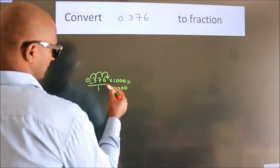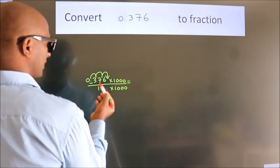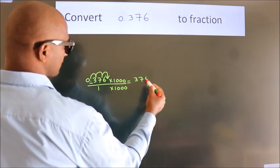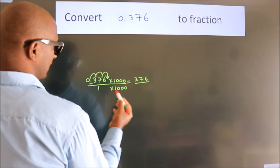Next, 0.376 into 1,000 equals 376. 1 into 1,000.